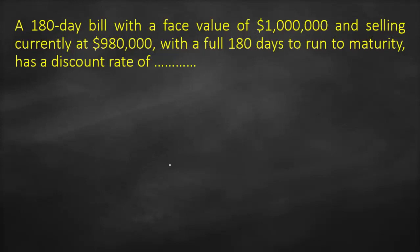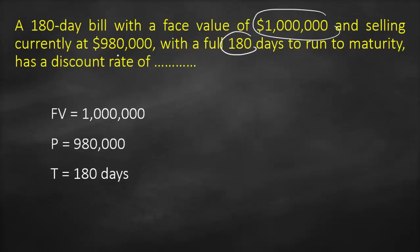A 180-day bill with a face value of $1,000,000 and selling currently at $980,000, with a full 180 days to run to maturity, has a discount rate of... So here we have future value or face value of 1 million, we have time of 180, we have principle or present value $980,000, and we need to calculate our discount rate.